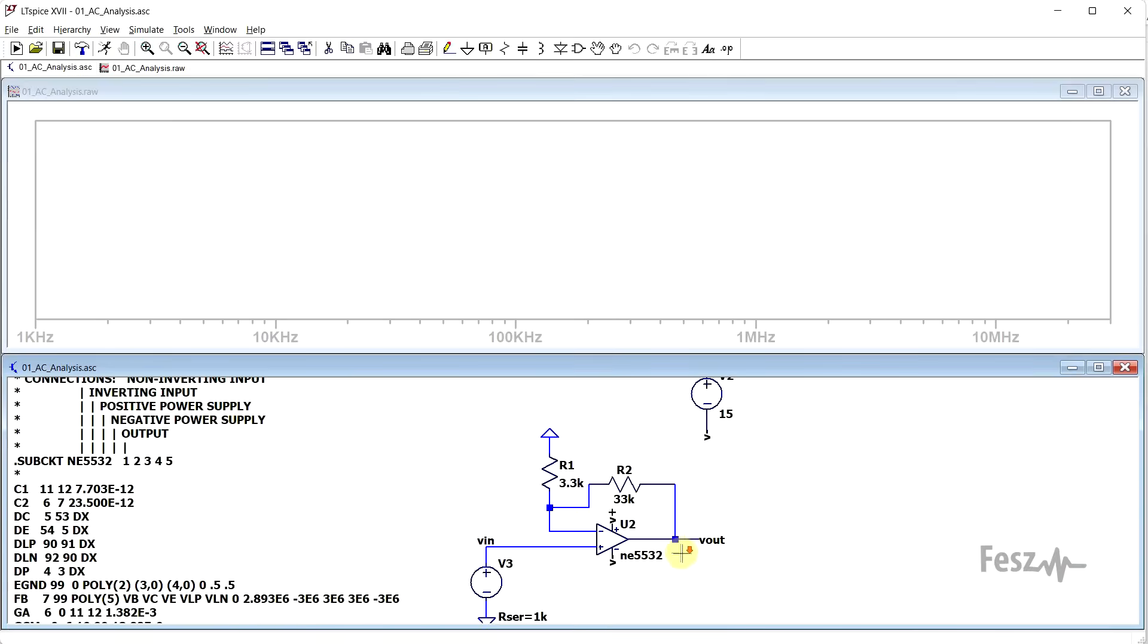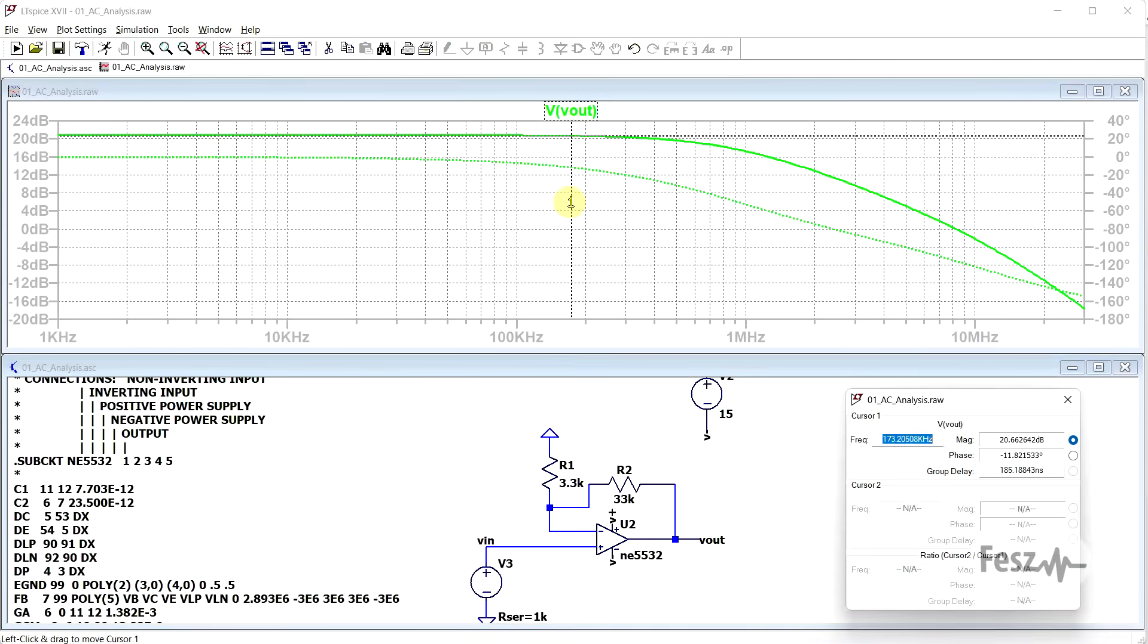So, if we run the circuit and check the output, we can see the 20-ish dB gain value, as well as the 0 dB gain point, which, for this model at least, is around 8 MHz.